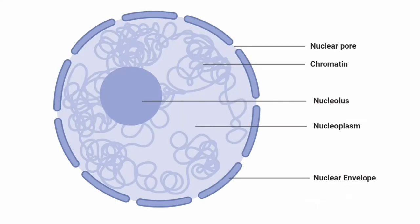Let's take a closer look at the structure of a nucleus. The nucleus is known to have a double membrane, also called the nuclear envelope. The nuclear envelope is filled with pores called nuclear pores. Within the nucleus there is nucleoplasm, and within the nucleoplasm lies the nucleolus and chromatin. Chromatin contains DNA, which contains the genetic information of the cell.